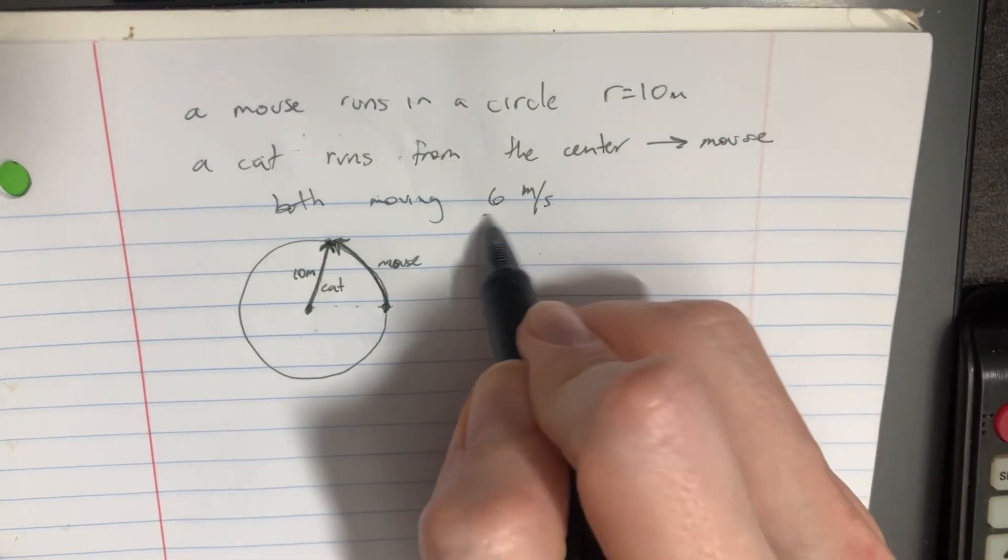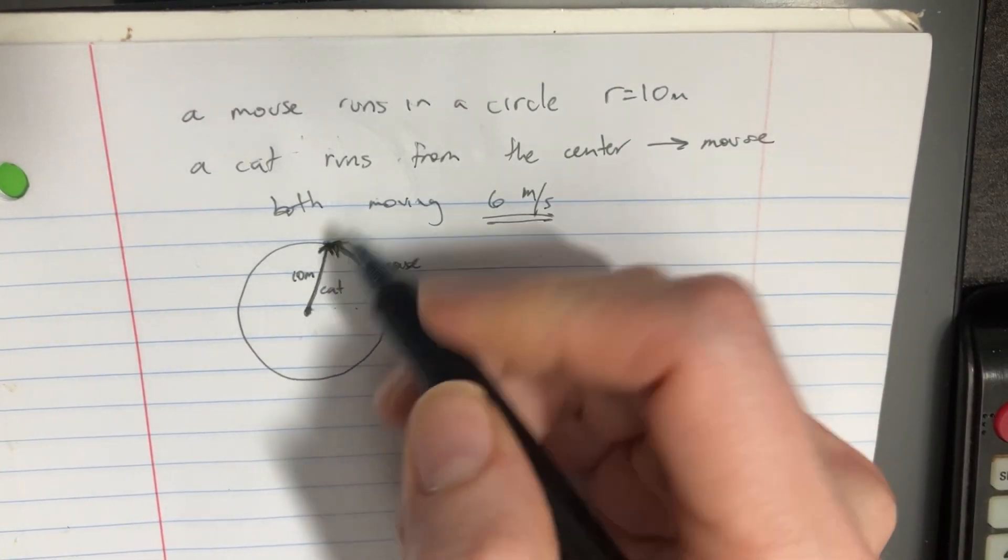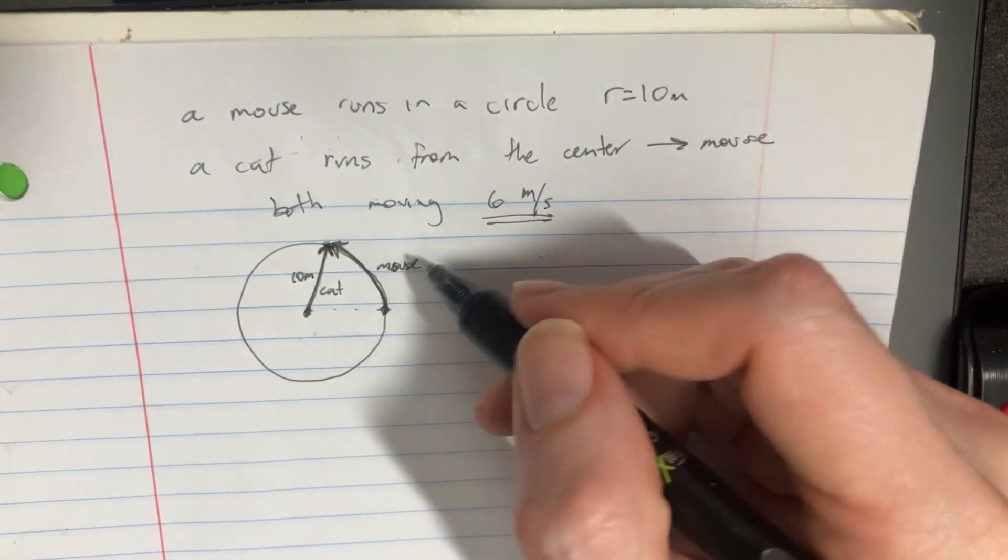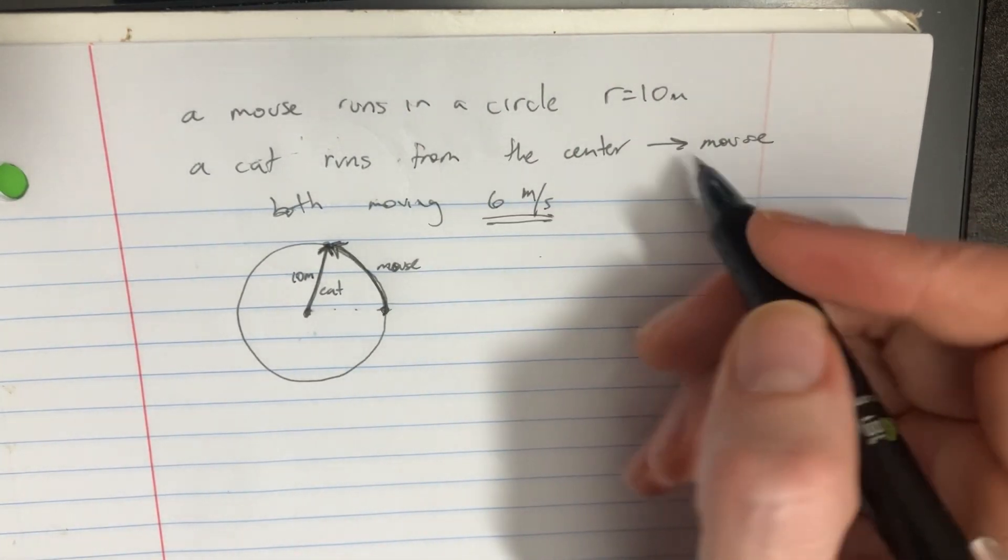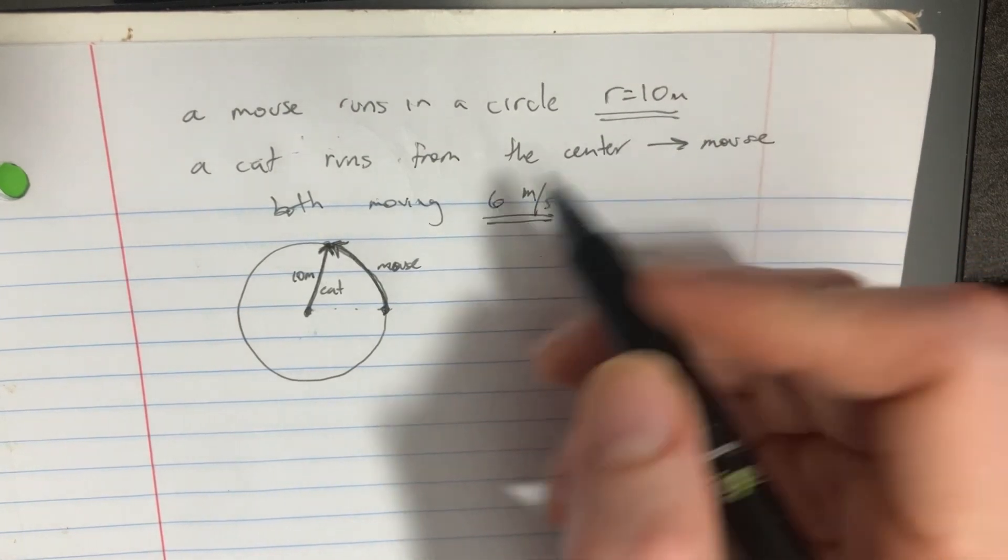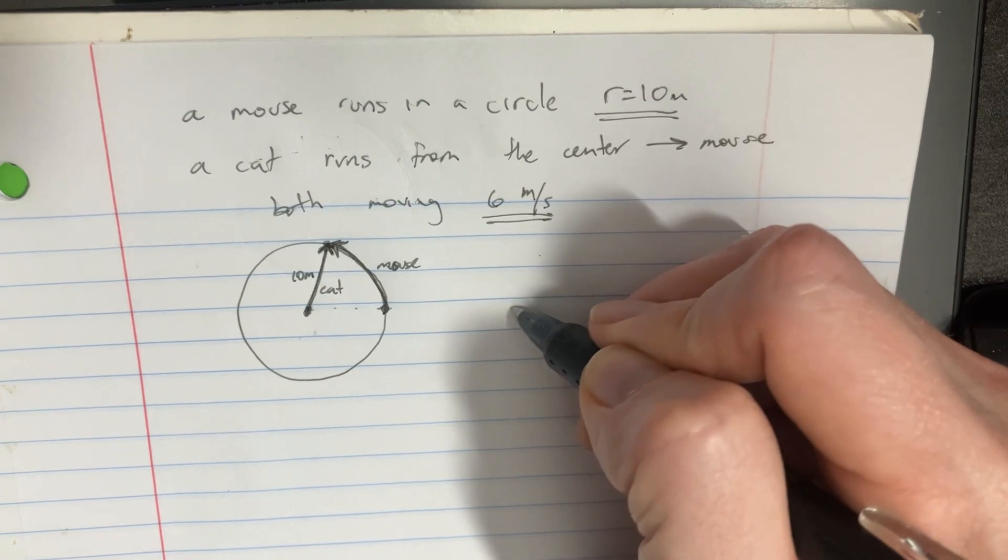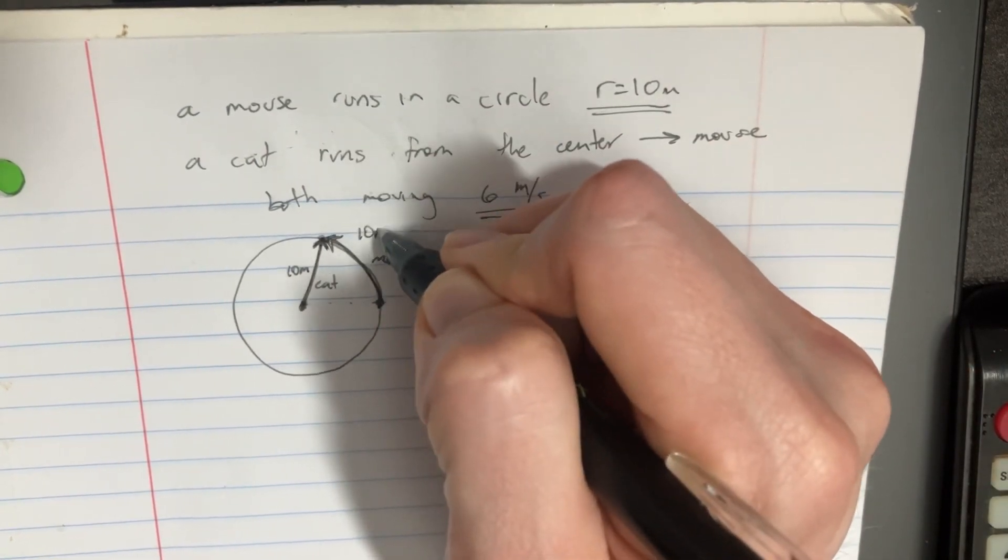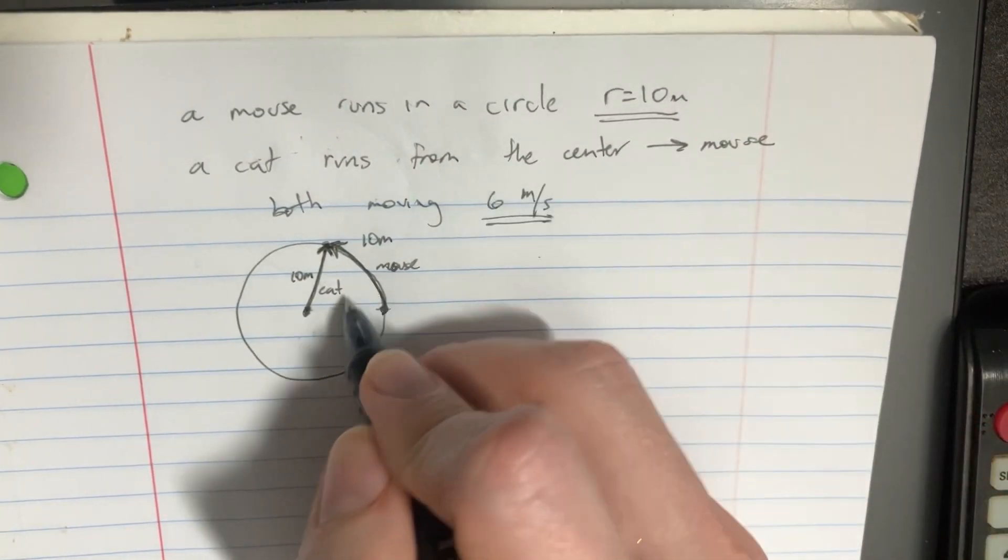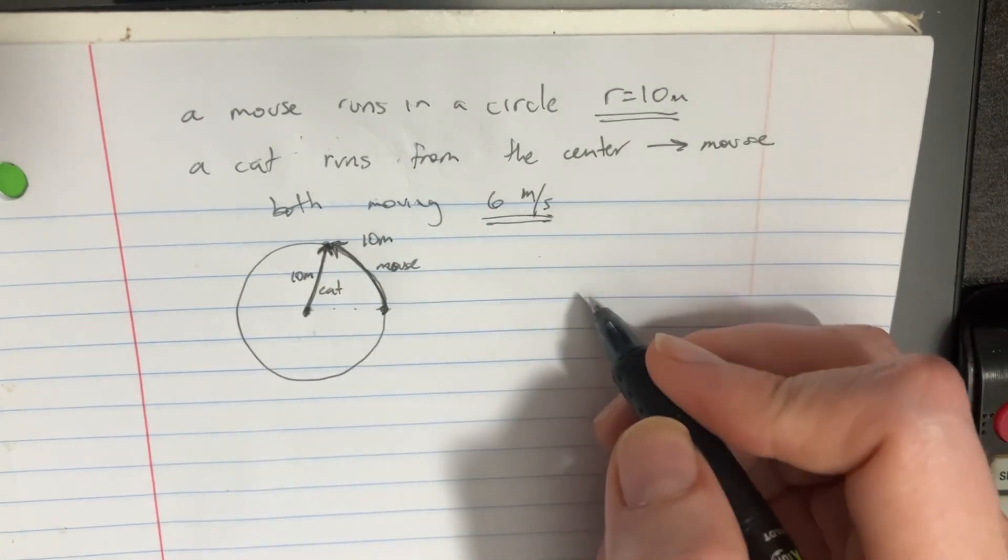Something really important is they're both moving at the same speed. And if they're both moving at the same speed, that means that no matter how much time has passed, they're going to move the same distance. So if this thing is going to move 10 meters this direction, then the mouse also has to move 10 meters because it's moving at the same speed. So it'll hit that point at the same time.